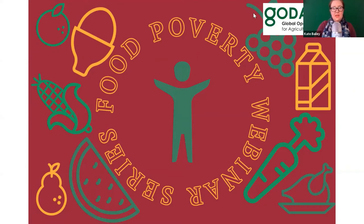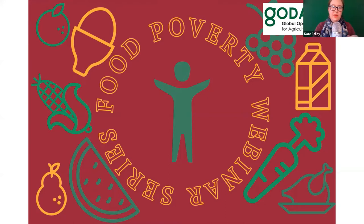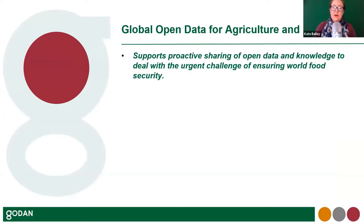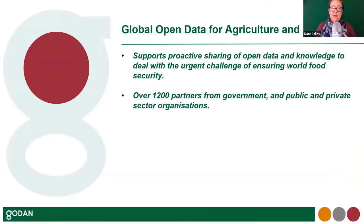I have a few slides to share about GODAN and what we are doing through our food poverty working group. For those who haven't yet come into contact with GODAN — Global Open Data for Agriculture and Nutrition — it supports the proactive sharing of open data and knowledge to deal with the urgent challenges of ensuring world food security. At the heart of GODAN is a growing network of over 1,200 partners from governments, private and public sector organizations, all signed up to a joint statement of purpose supporting the proactive sharing of open data.